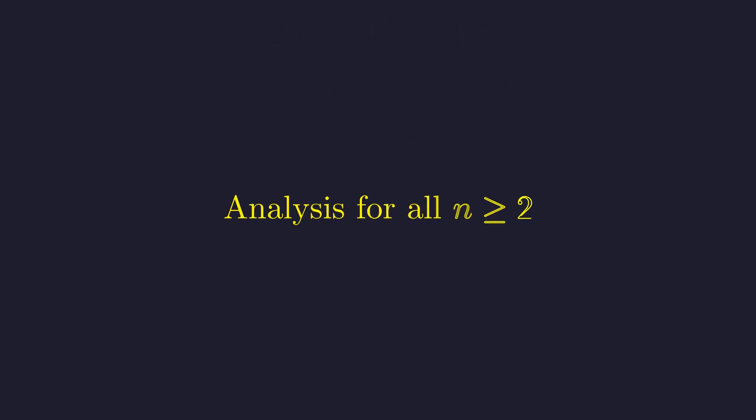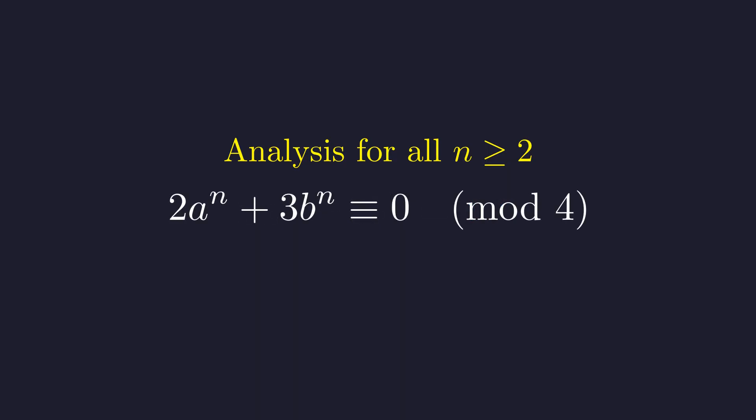Now we must consider the higher powers. Let's first establish a key constraint that applies to all cases where n is greater than or equal to two. For any n greater than or equal to two, simple trial and error is unlikely to work. We need a more powerful technique. The key insight comes from the right hand side: the term four times c to the n is guaranteed to be a multiple of four. This implies that the left hand side must also be a multiple of four. We can analyze this using modular arithmetic.